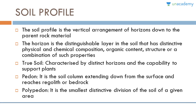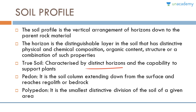The soil profile is a vertical arrangement of horizons down to the parent rock material. A horizon is a distinguishable layer in the soil that has distinctive physical and chemical composition, distinctive organic content and structure, or a combination of such properties. True soil is characterized by distinct horizons and the capability to support plants. A pedon is the soil column extending from the surface down to regolith or bedrock. A polypedon is the smallest distinctive division of soil in a given area.